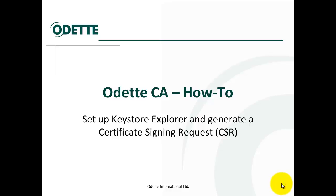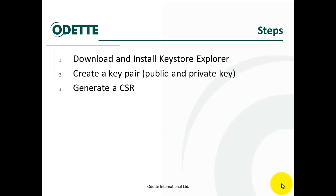In this session, I want to show you how to set up Keystore Explorer and to generate a certificate signing request with this tool. We have to follow three steps: number one is download and install the Keystore Explorer, then we create a key pair — a public and a private key — and finally we generate a certificate signing request.